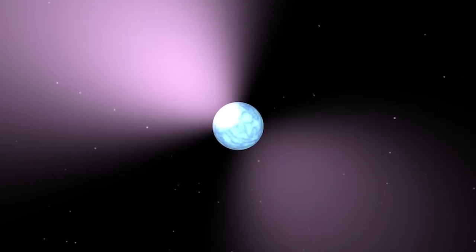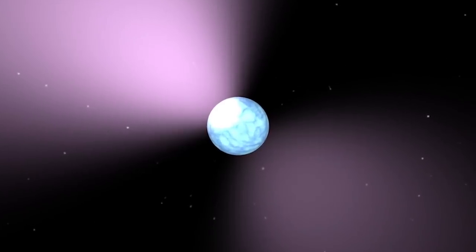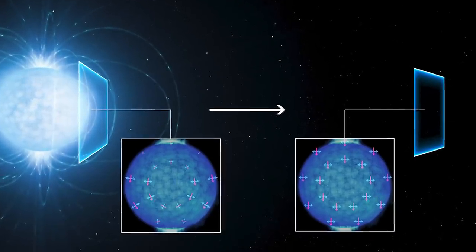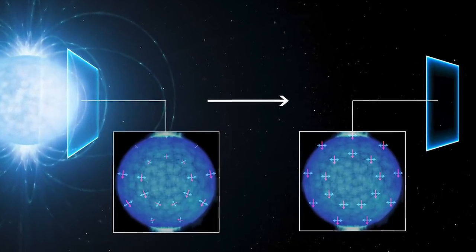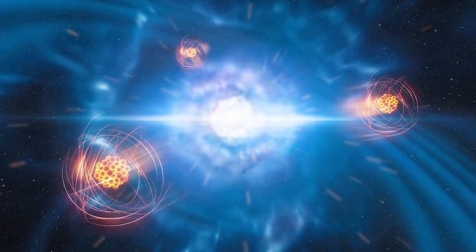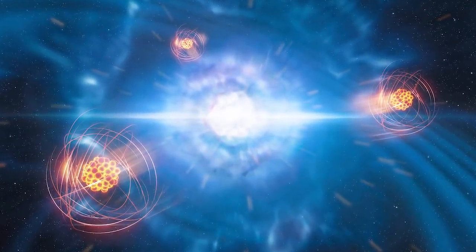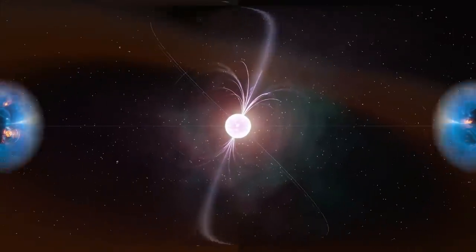And no, a neutron star is not a subatomic particle which grew to the size of a star. It isn't also a bunch of neutrons agreeing to somehow collectively come together to form a humongous star. Although we can effectively say that a neutron star is like a giant atom.